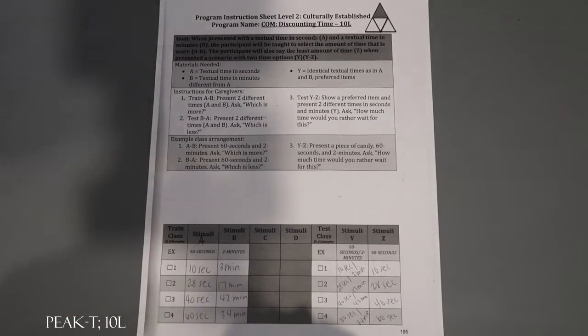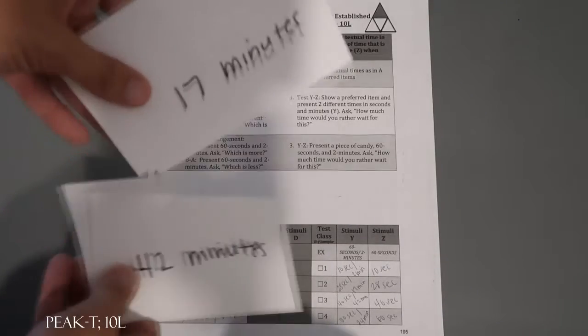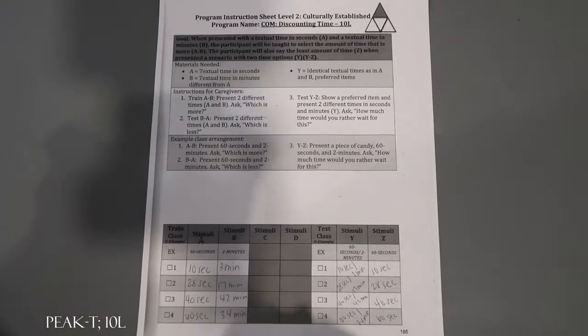So that's your stimuli A. Stimuli B is the textual time in minutes that is different from A. So then I have four more flashcards that will laminate that has the minutes. So 3 minutes, 42 minutes, 17, and 34 minutes.